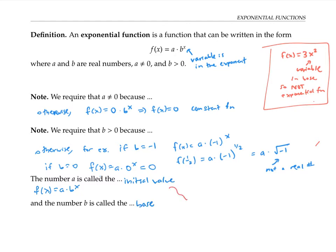The phrase initial value comes from the fact that if we plug in x = 0, we get a·b^0. Well, anything to the zero is just one, so this equals a. In other words, f(0) = a. So if we think of starting out when x equals zero, we get the y value of a. That's why it's called the initial value.